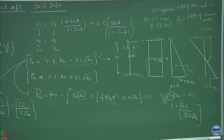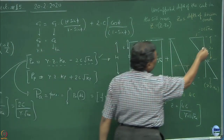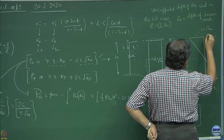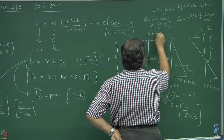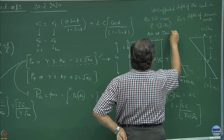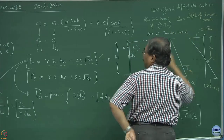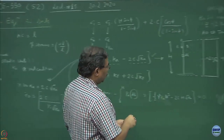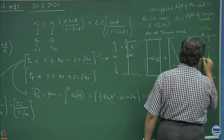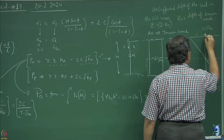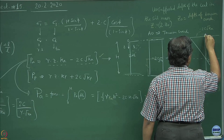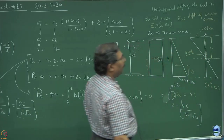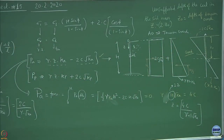What we have proven is that the total depth of the unsupported cut is equal to 2 times the tension crack depth. This concept of tension crack will be utilized quite frequently. AO is defined as the tension crack. When the tension crack develops in the soil mass, this portion of the soil will not be in contact with the wall — this is how the tension crack develops, and this crack gets prone to accumulation of rainwater.